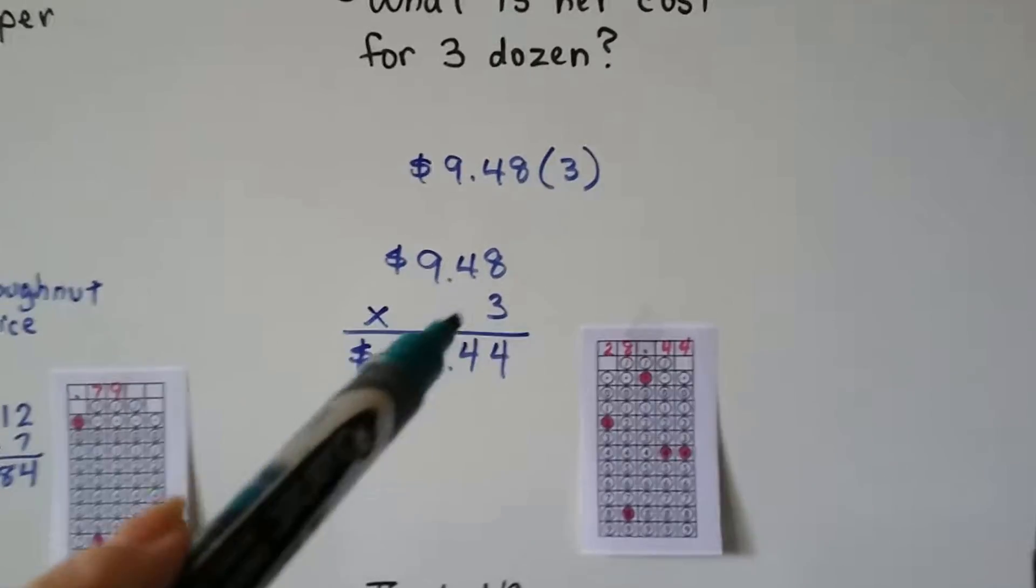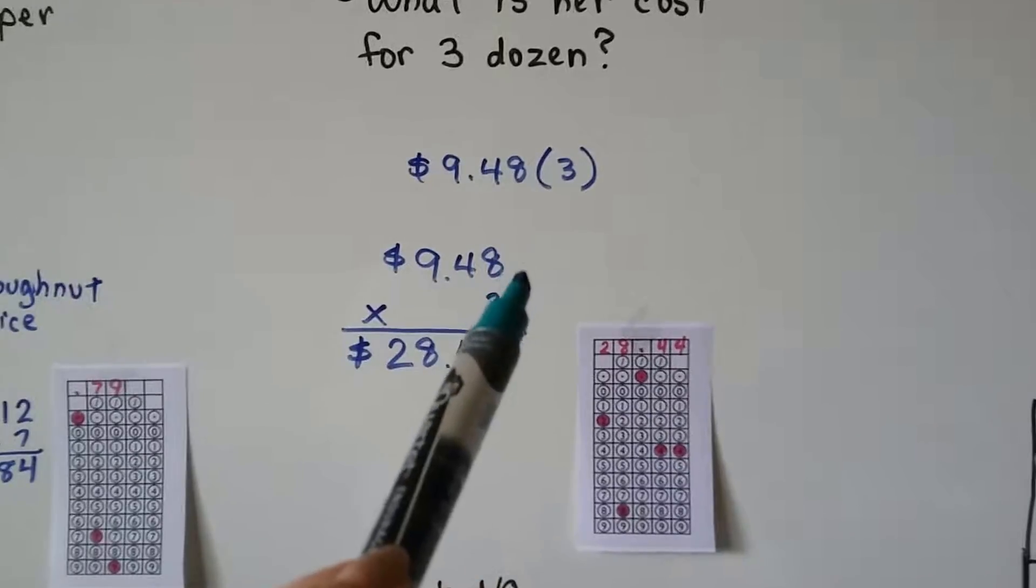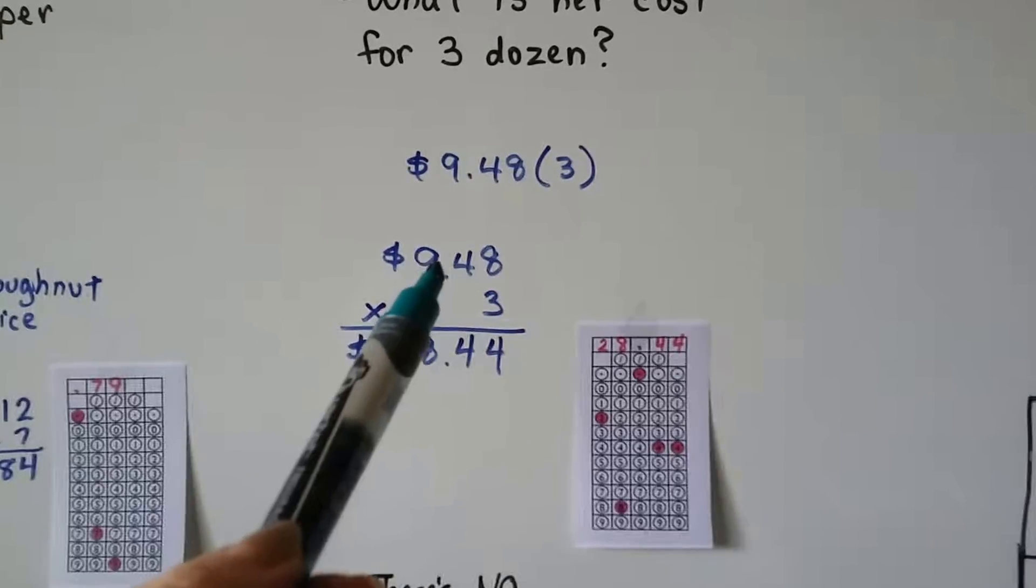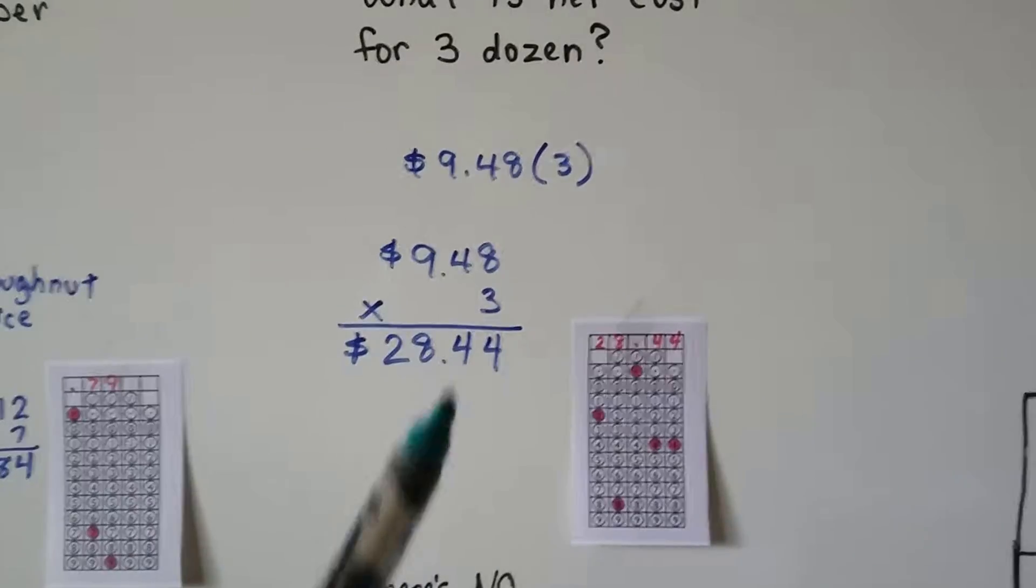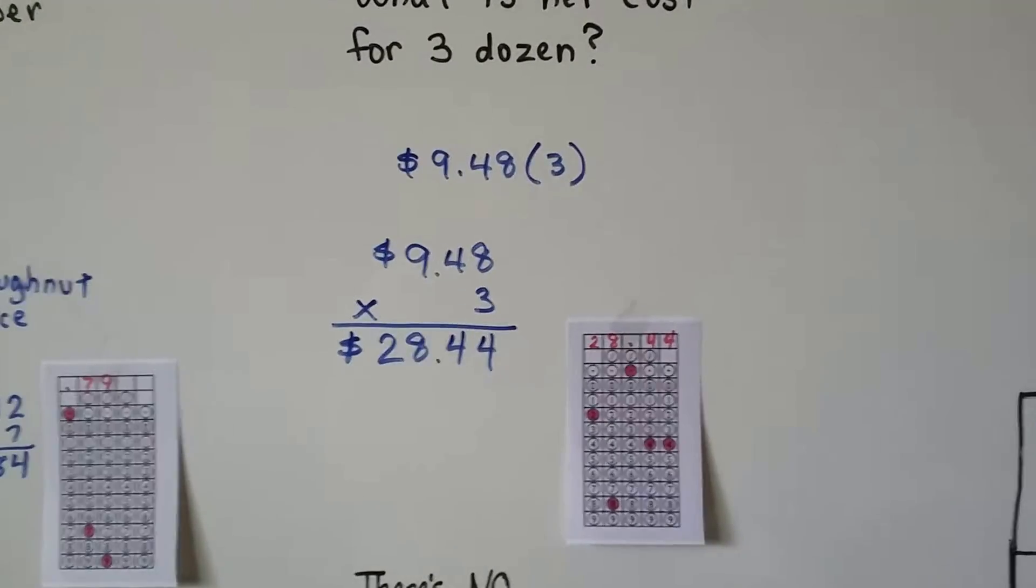And if there's two decimal hops in the equation, 1, 2, then there's two decimal hops in the product, 1, 2. We get $28.44.